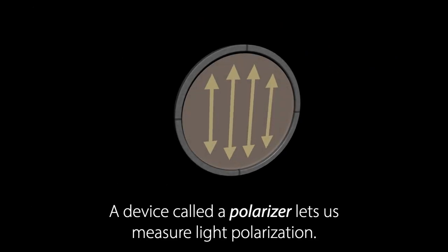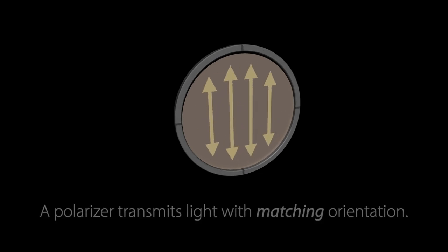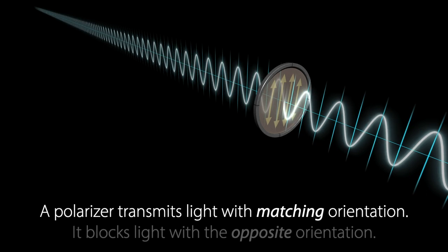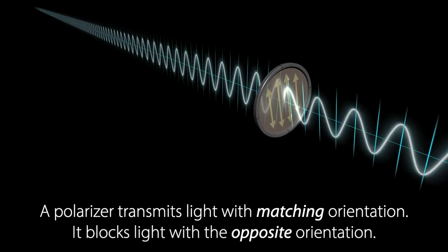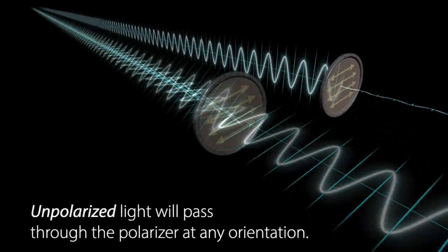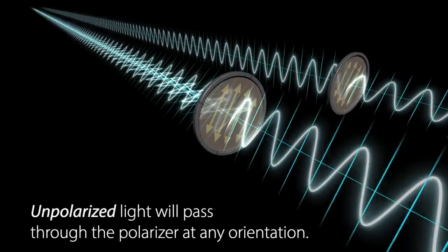A device called a polarizer lets us measure light polarization. A polarizer transmits light with matching orientation. It blocks light with the opposite orientation. Unpolarized light will pass through the polarizer at any orientation.